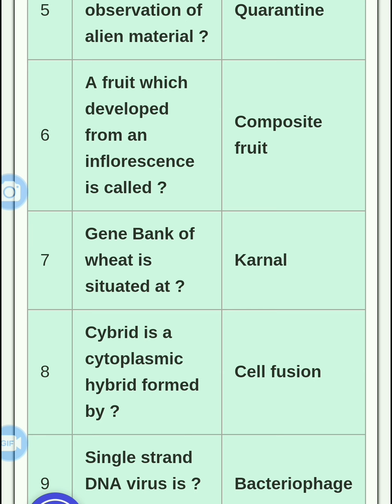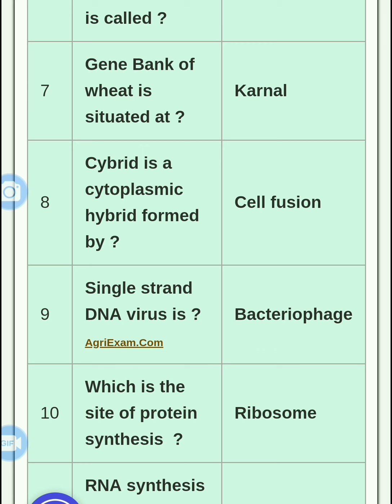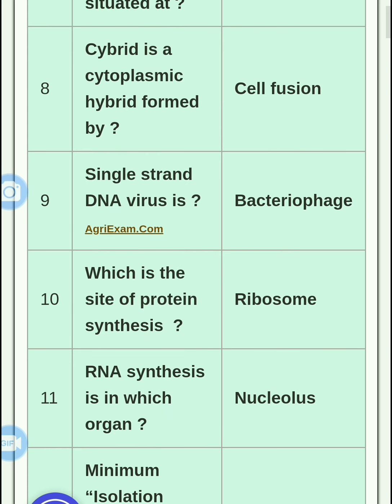The gene bank of wheat is situated in CIMMYT, which is the kernel. Then, a cytoplasmic hybrid is formed by fusion of cells. A single-strand DNA virus is a bacteriophage.